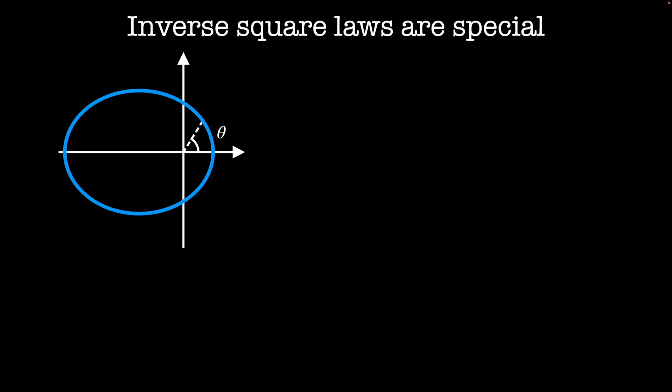Hello and welcome to Classical Mechanics 2. In this video, we'll take a closer look at the inverse square law problem using Hamiltonian formalism. We'll start out by deriving an unexpected constant of the motion that we will use to find that there's actually a hidden symmetry in these systems.